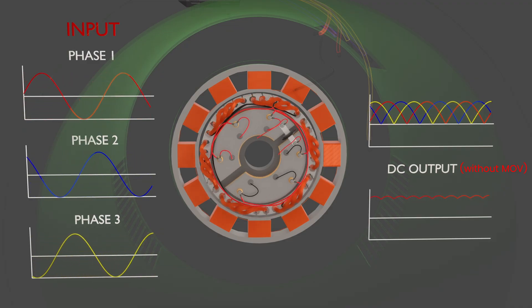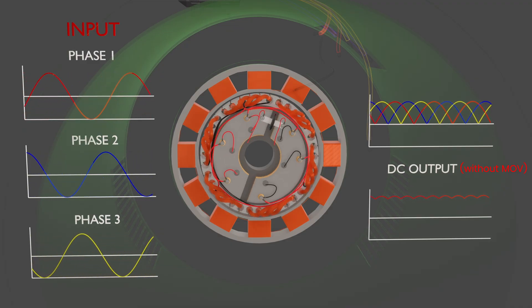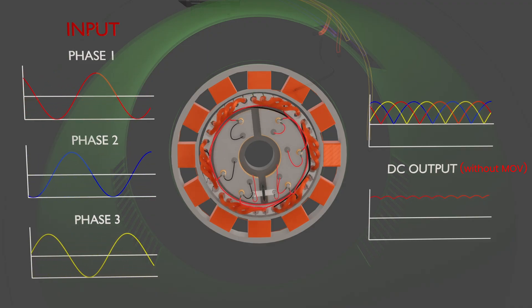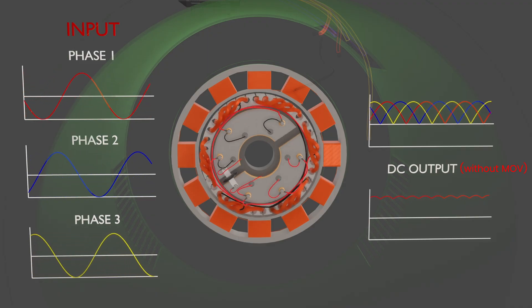By using three-phase full-wave rectification, the ripple in DC current is significantly reduced compared to single-phase rectification. The graph shows how AC current is converted to smoother DC current.